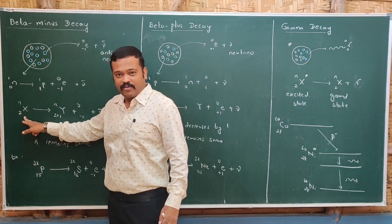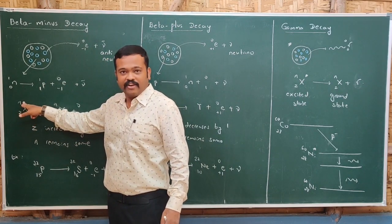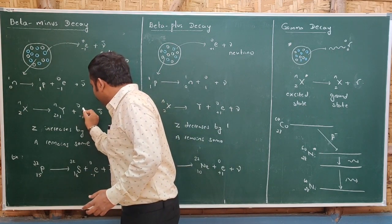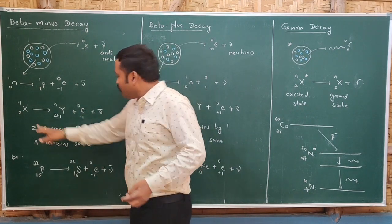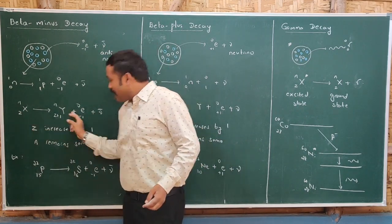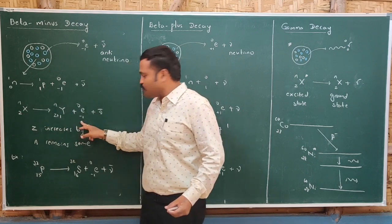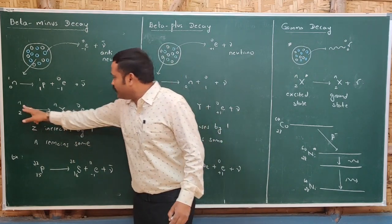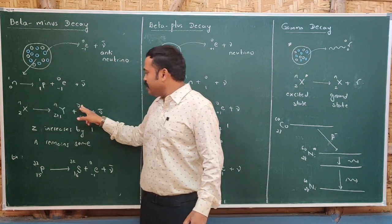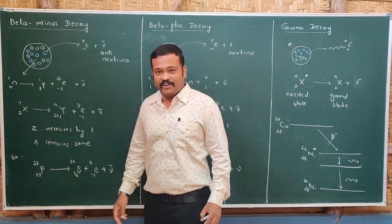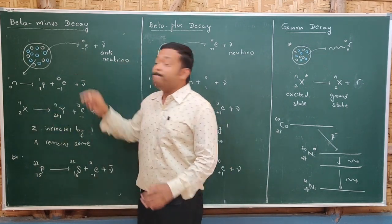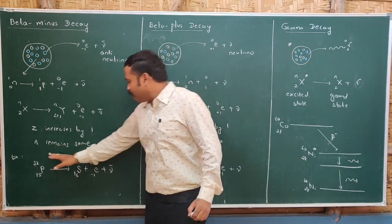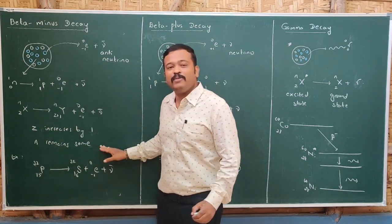For the parent nucleus X(Z, A), when an electron with charge minus 1 and mass 0 is emitted, to balance the equation the atomic number of the daughter nucleus becomes Z+1, while the mass number remains A. So when beta minus decay takes place, the atomic number increases by one and the mass number remains the same.